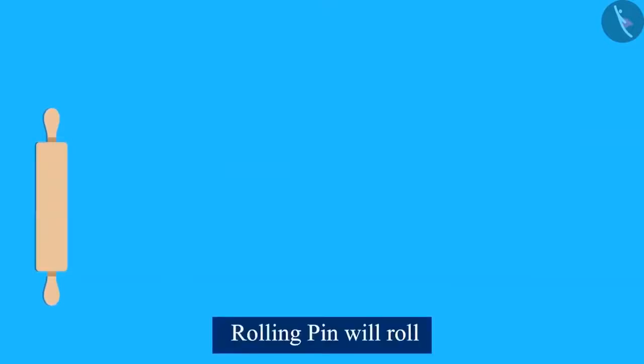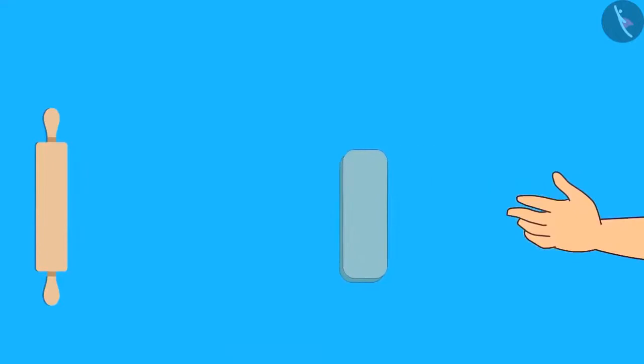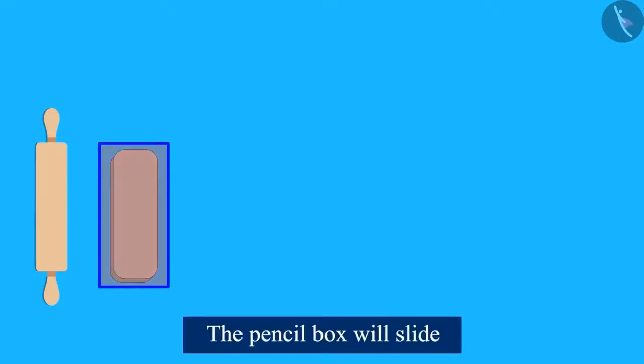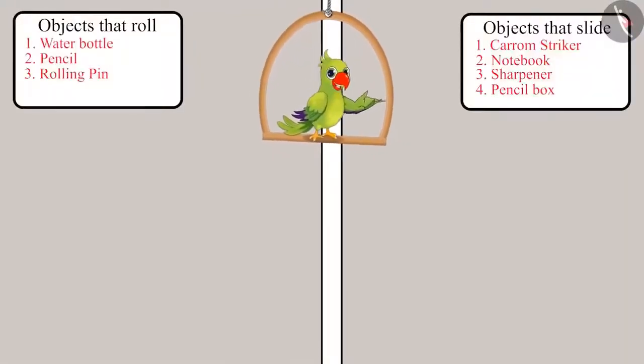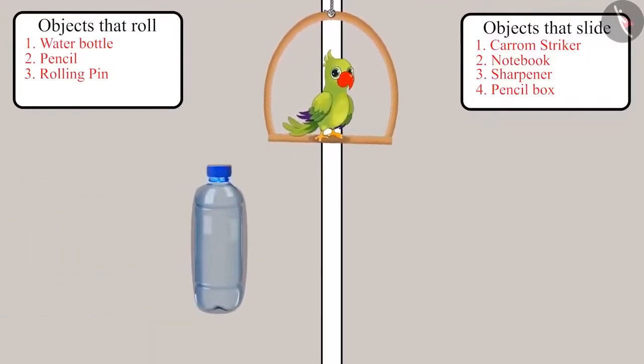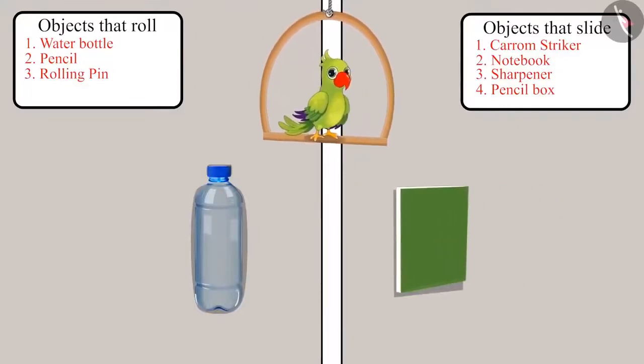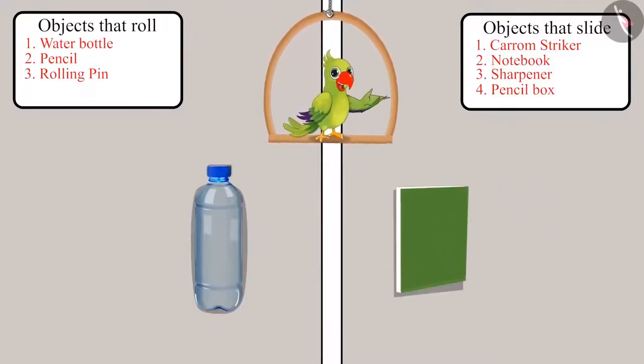So children, can you tell whether this rolling pin will slide or roll? The surface of this rolling pin is circular, so it will roll. And this pencil box — if its surface is not circular, it will slide. So children, you saw that the objects whose surface is circular always roll on the floor, and those whose surface is not circular always slide on the floor.